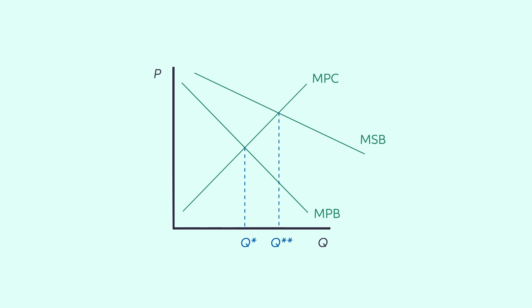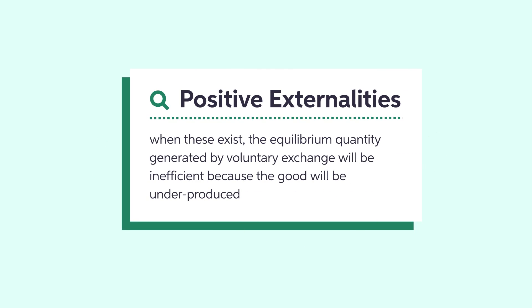Increasing output by one more graduate would generate more social benefit than private cost. Net social benefits would increase by increasing the number of graduates. This occurs for any additional graduates, up to QDouble Star. The market process produces an inefficient allocation of society's resources due to underproduction of college graduates.